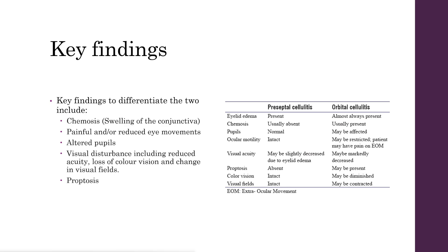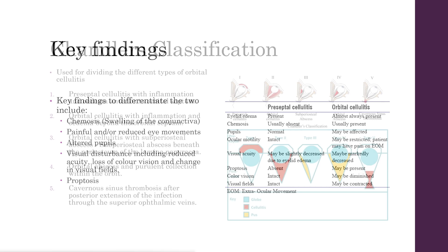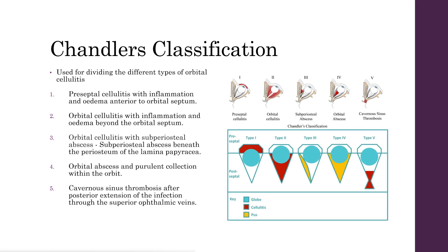They may also develop proptosis or bulging of the eye as a result of increased pressure behind the eye. When assessing these sorts of patients, we use something called the Chandler's classification, which is a classification from 1 to 5, and it differentiates between the different types of orbital cellulitis.